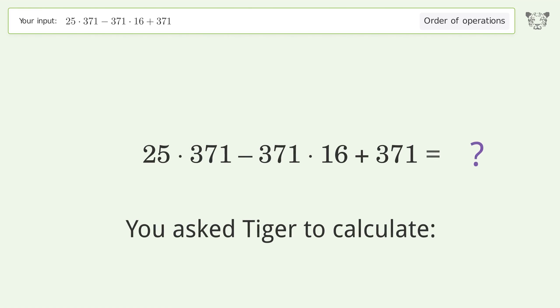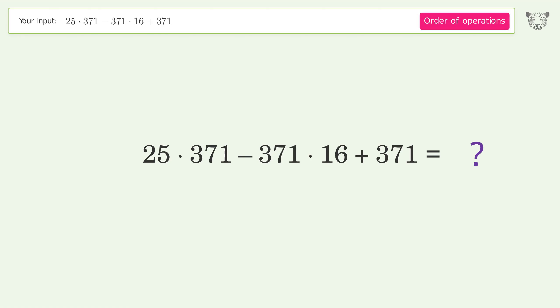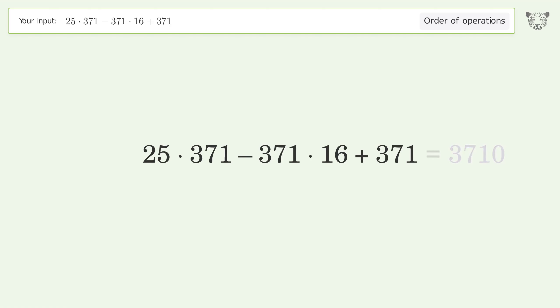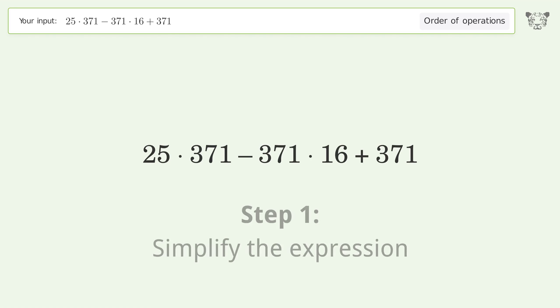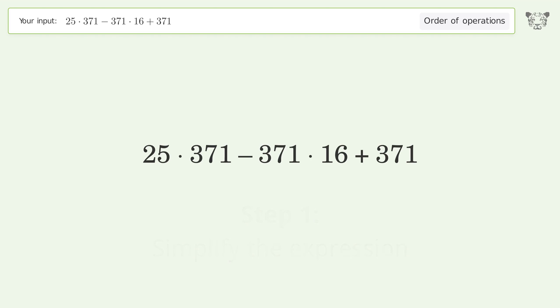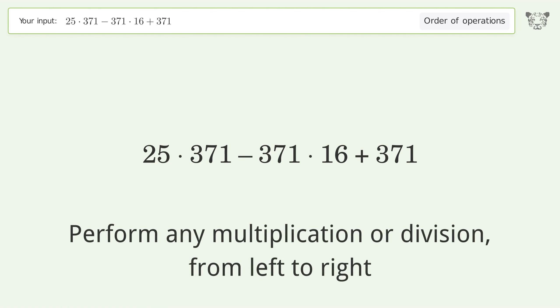You asked Tiger to calculate this. It deals with the order of operations, and the final result is 3710. Let's solve it step by step: simplify the expression and perform any multiplication or division from left to right.